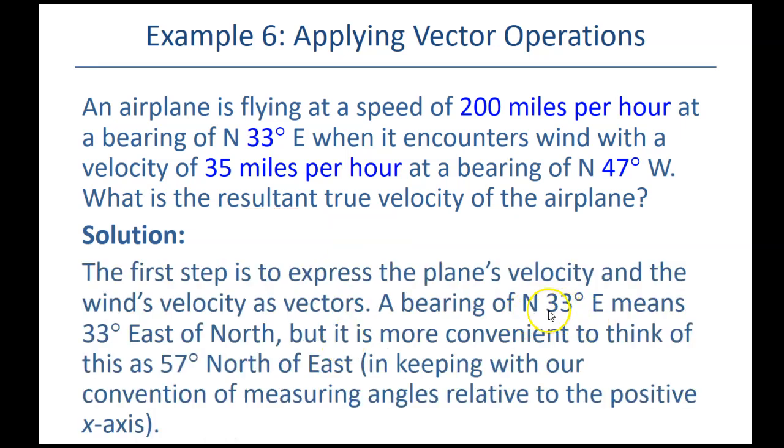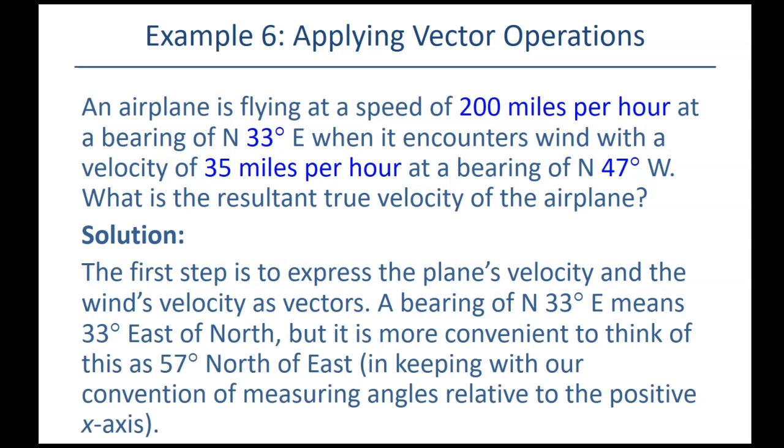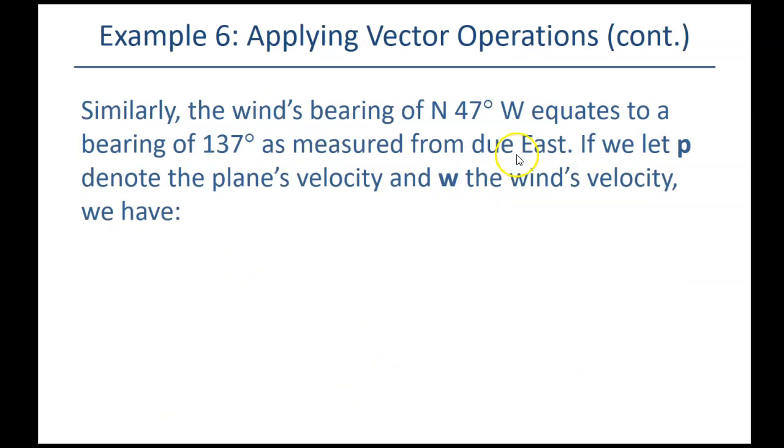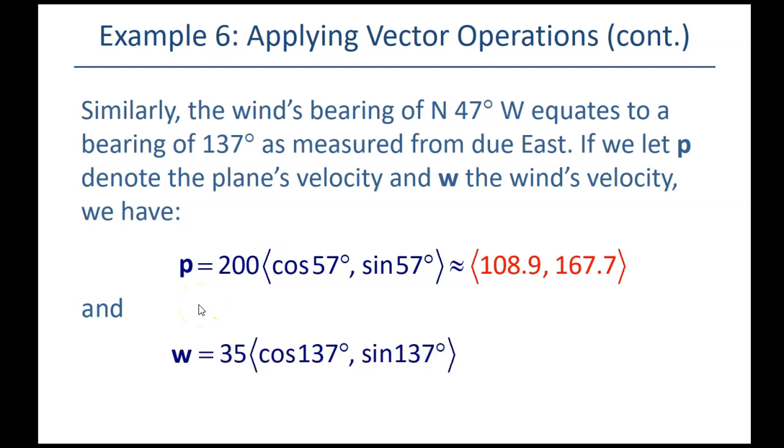So, there's the 33 degrees east of north is 57 degrees off the east. So, that's the first thing we said. And then likewise, the other one, the 47 degrees west of north is 137 degrees measured from due east. So, again, we want it measured off that positive x-axis so we can get the right numbers. So, there's the plane, the 200 miles an hour. This is the velocity. And then the 57 degrees is the one we want. And then for the wind, we want to use the 137 degrees from due east. And that will be what we combine together.